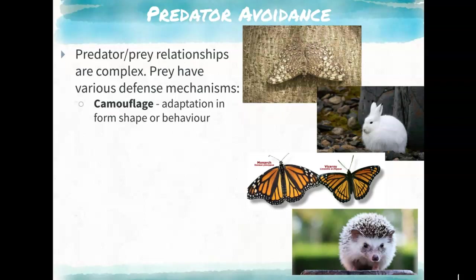If you have a certain coloration but don't use it to your advantage, it doesn't help. For example, this moth blends in really well with the bark, but he has to have the behavior to actually sit on the matching tree for camouflage to be an advantage.